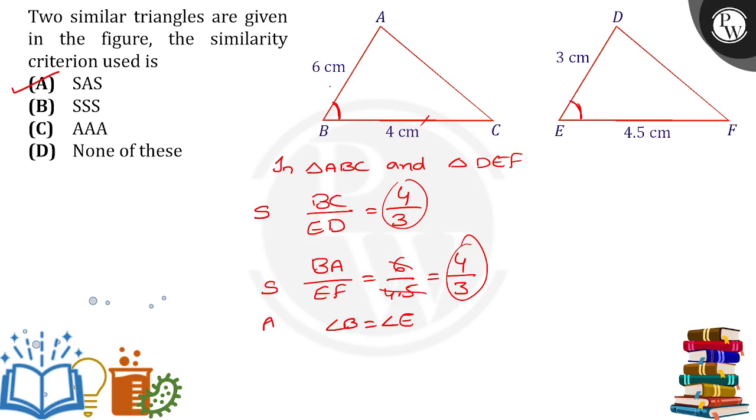by using SAS similarity, we can say that triangle ABC is similar to triangle FED. So these two triangles are similar to each other. Thank you.